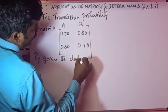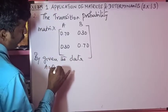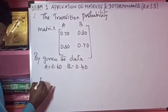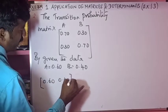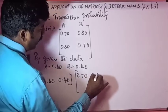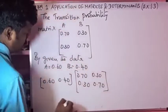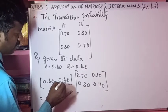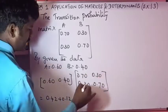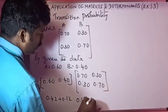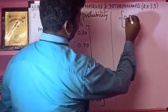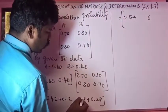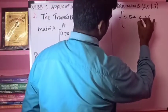For part one, we compute [0.60, 0.40] multiplied by [[0.70, 0.30], [0.30, 0.70]]. This gives: 0.60 × 0.70 + 0.40 × 0.30 = 0.42 + 0.12 = 0.54, and 0.60 × 0.30 + 0.40 × 0.70 = 0.18 + 0.28 = 0.46.